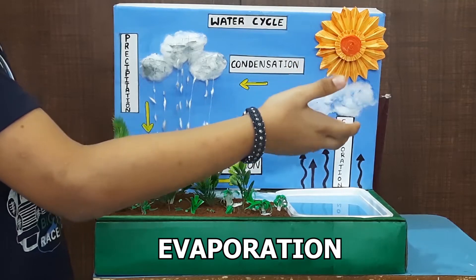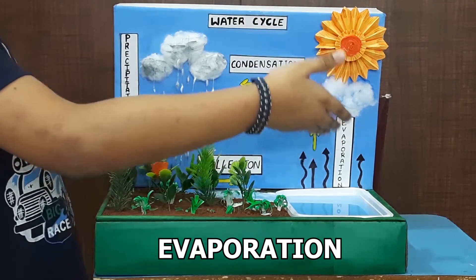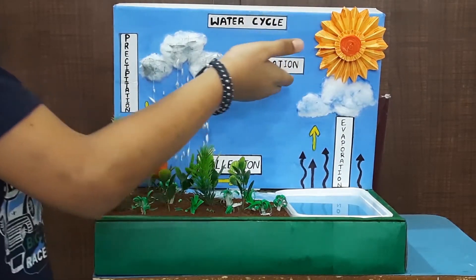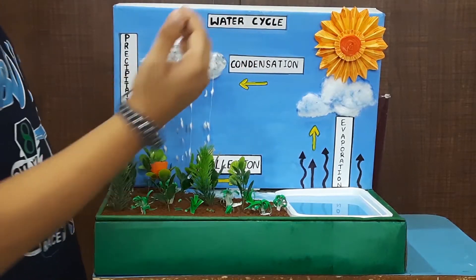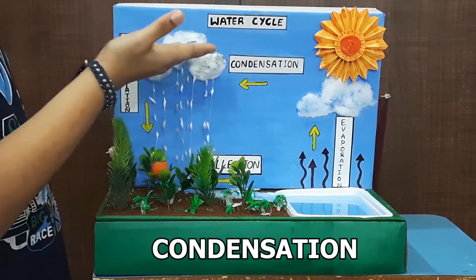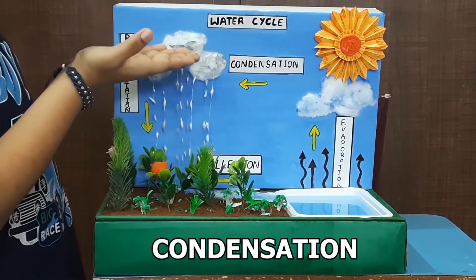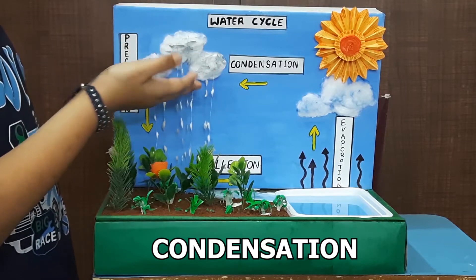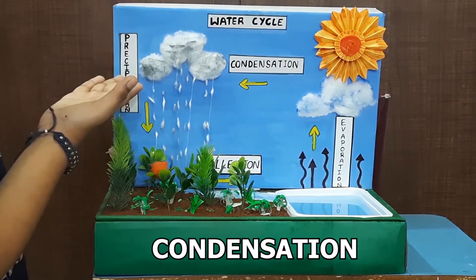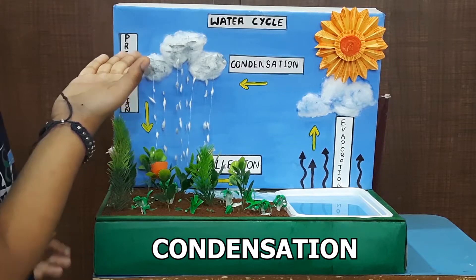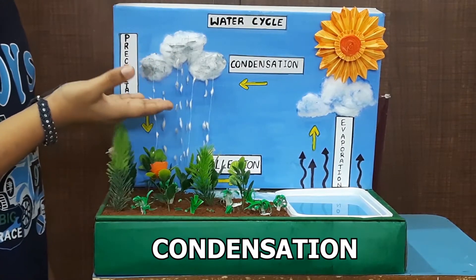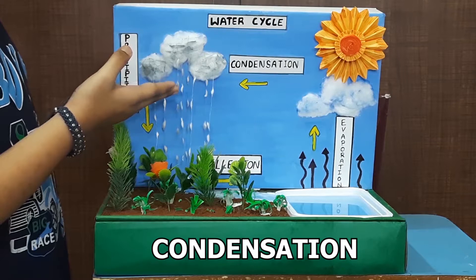The water vapor rises up into the atmosphere. When the water vapor becomes cool, condensation takes place. Condensation is vapor changing into liquid. As the vapor rises up, it cools and condenses to form tiny droplets of water around dust particles in the air.